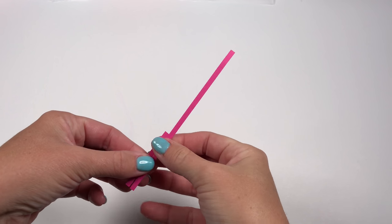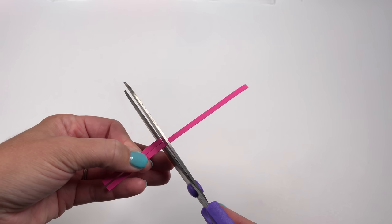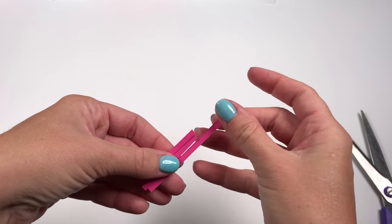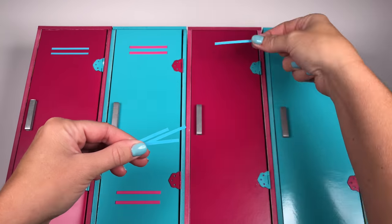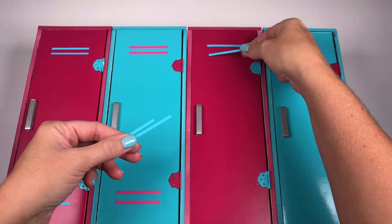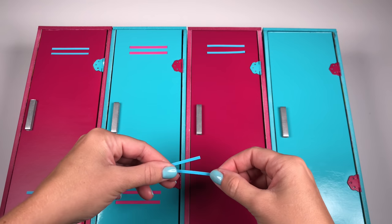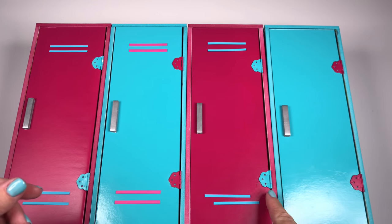For the locker vents, cut strips of paper the same size, four for each locker. Two vents on the top and two vents on the bottom. Again, I'm using coordinating colors to make the lockers pop. To attach them, I just used a glue stick.